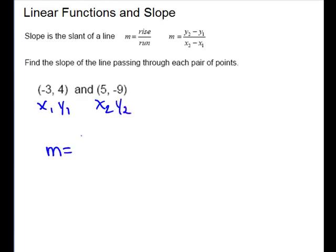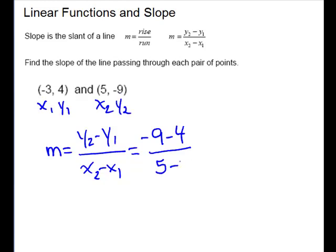M is equal to change in y's over change in x's. Plug in. So we have negative 9 minus 4 over 5 minus a negative 3. Clean up. You have like signs and keep the sign. And this gives you a positive. So this is 8.